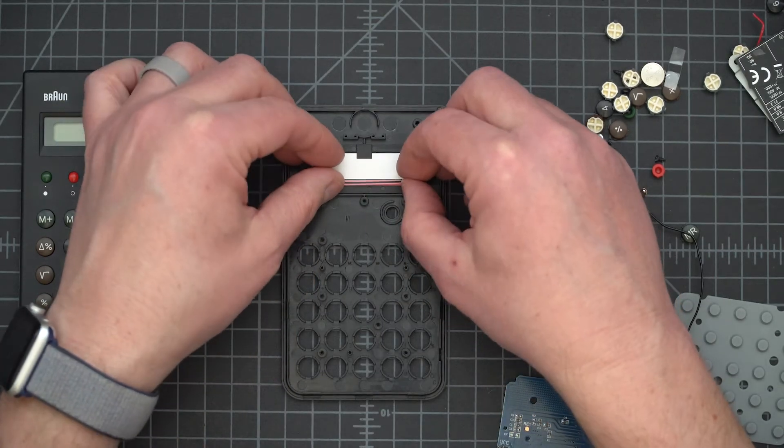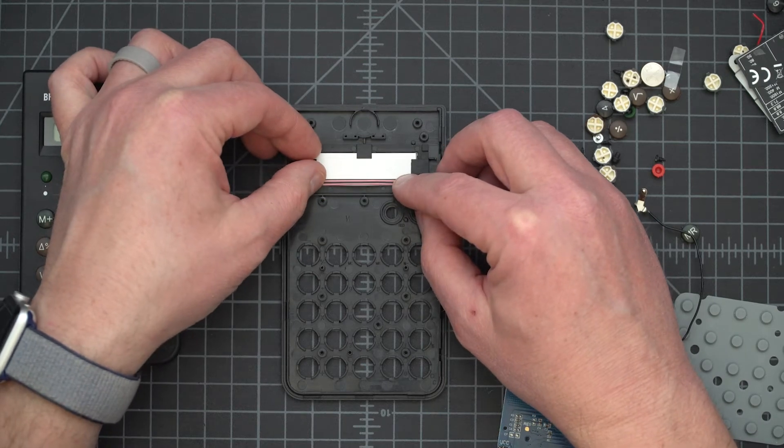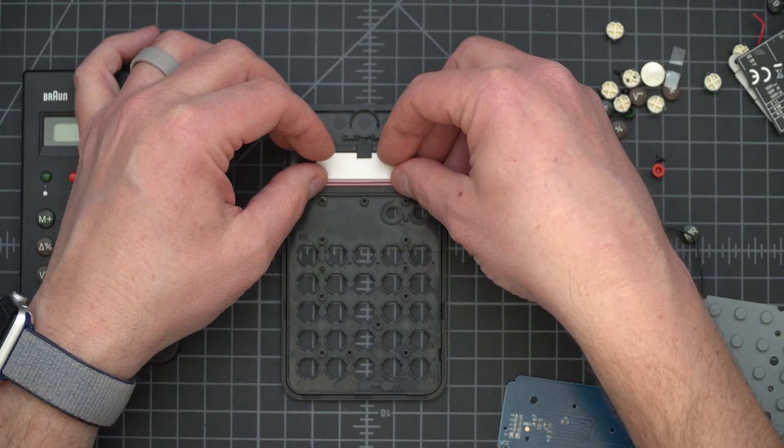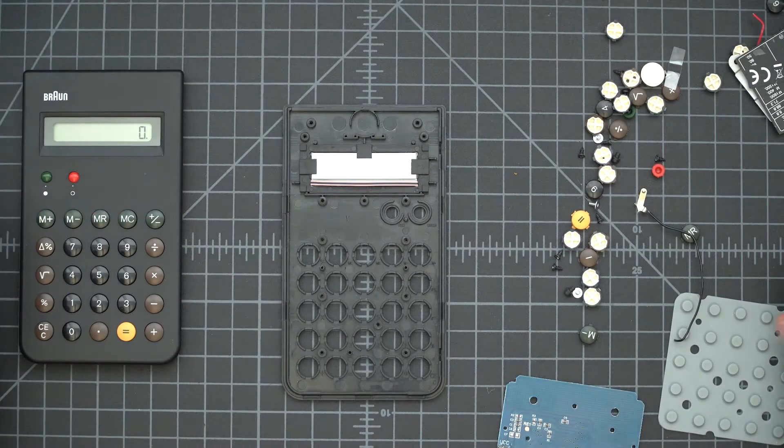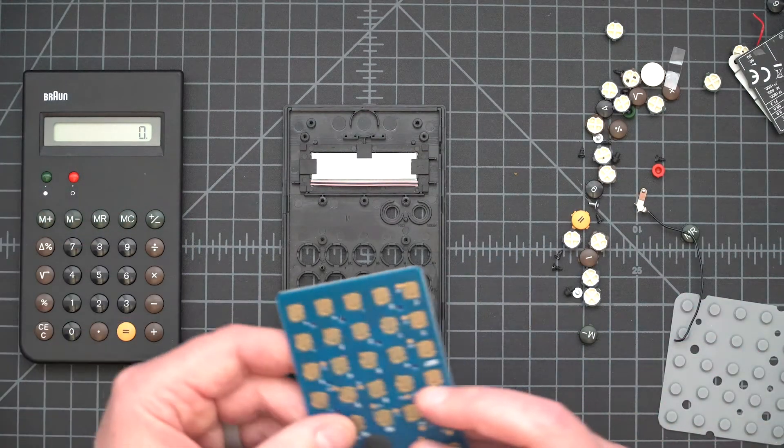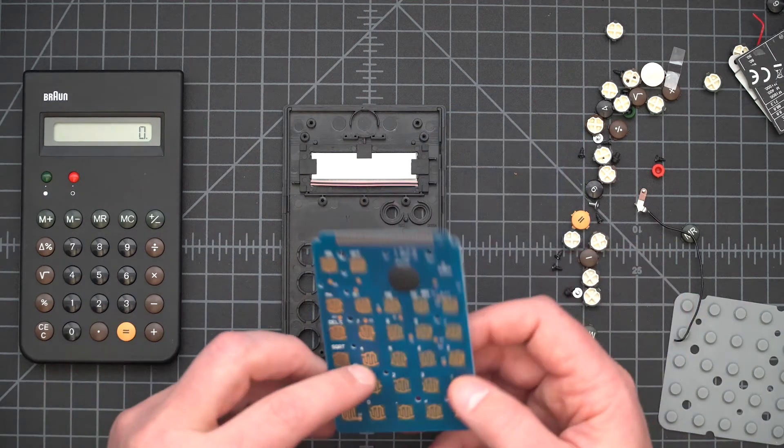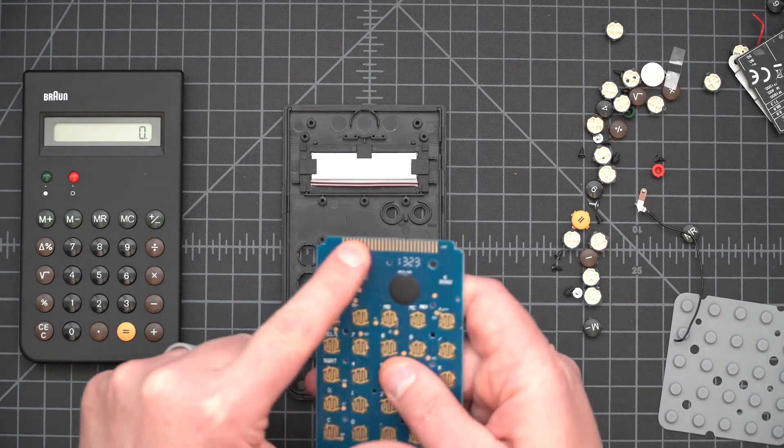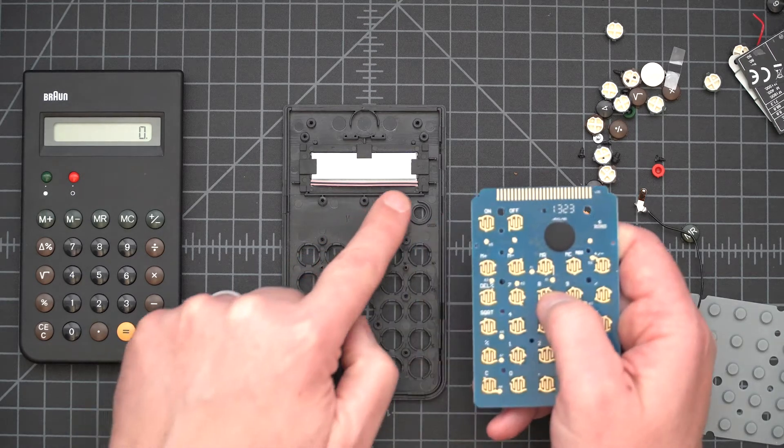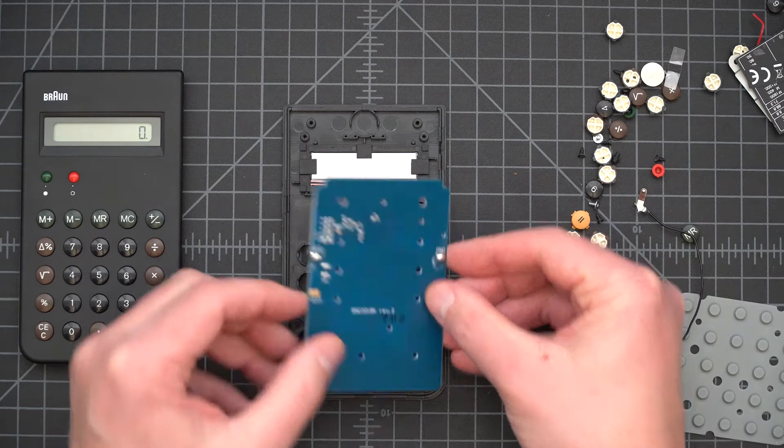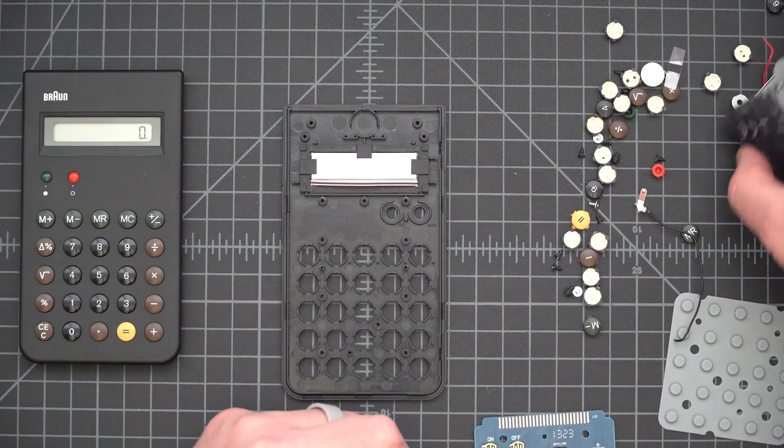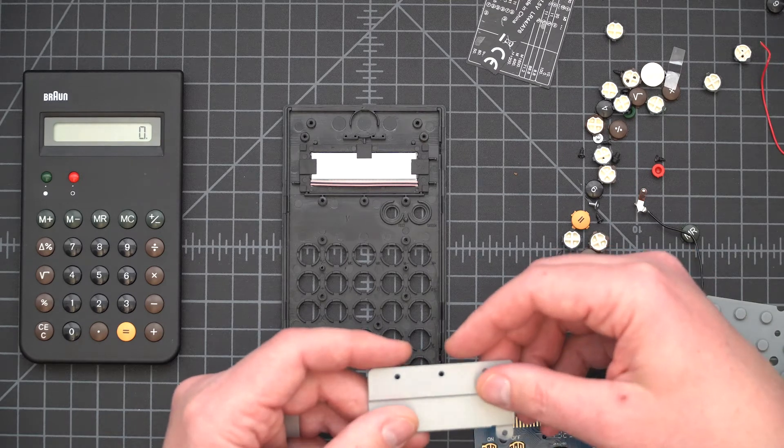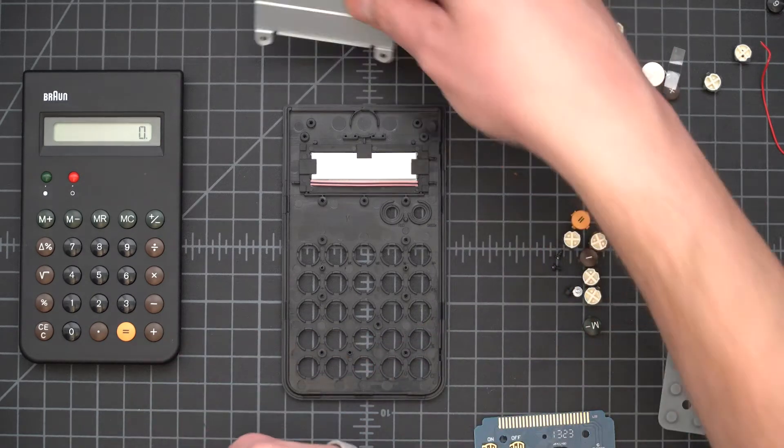Now this pink and black thing is a contact strip that connects the glass of the LCD to the circuit board. So that's an indication that the circuit board is going to go like this, where this line of contacts meets up with the pink and black. However, I need to think a little bit about how all these other pieces go in here.